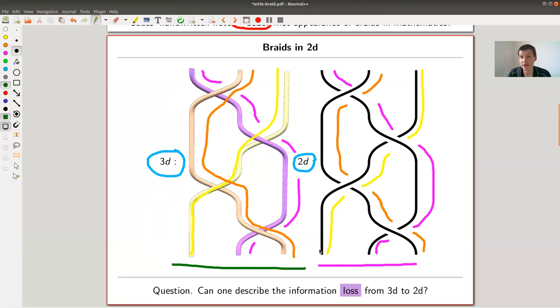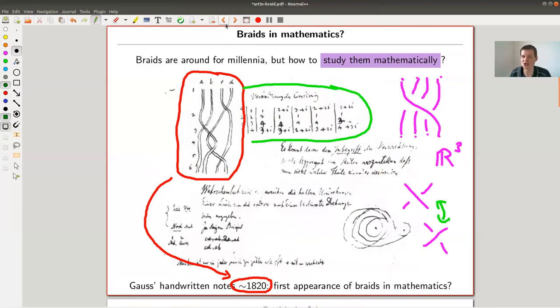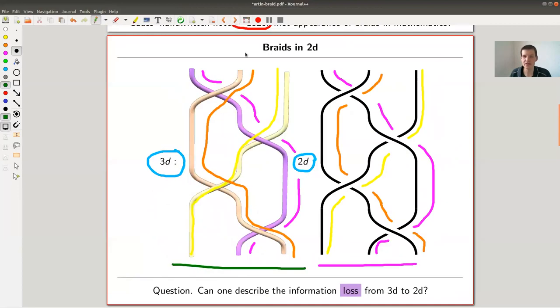And I'm trying to keep as many information as possible by kind of remembering which thread is before and which one is in the back, which one is in the front, which one is in the back. Similarly, I have this orange strand going on right here. And it goes, for example, under the yellow strand, but over this purple strand. And the purple strand is going all the way here. So what I do is I encoded the three dimensional information in a two dimensional picture.